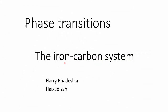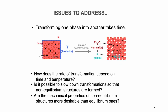Today's topic is the Fe-C (iron-carbon) phase diagram system. Here we try to understand the details of the phase transformation, specifically for the Fe-C phase diagram, where we consider the transition from gamma phase austenite, which is a single-phase FCC structure, to cementite plus ferrite, which is a two-phase structure.